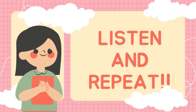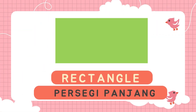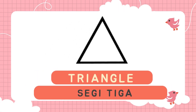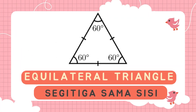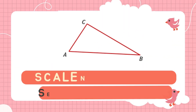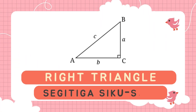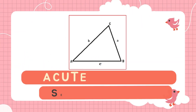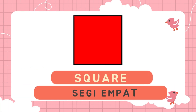Listen and repeat. Circle. Rectangle. Triangle. Isosceles Triangle. Equilateral Triangle. Scalene Triangle. Right Triangle. Acute Triangle. Square.